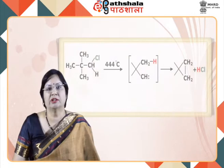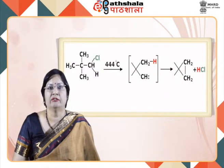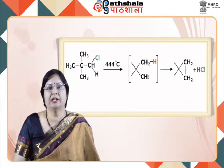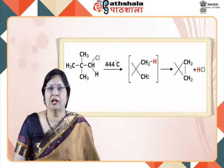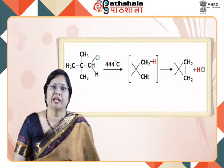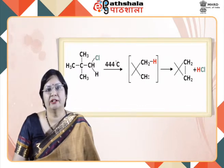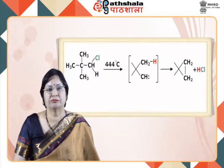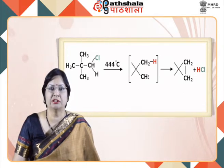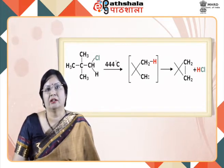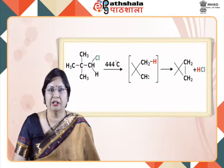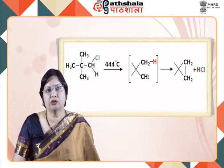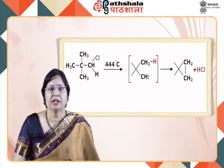For example, consider the case where Cl and H are eliminated from the same carbon, resulting in a 3-membered cyclic ring. Similarly, another elimination you are already familiar with is the intermediate formation from chloroform, where removal of H and Cl gives dichlorocarbene. So that is also a case of alpha elimination.